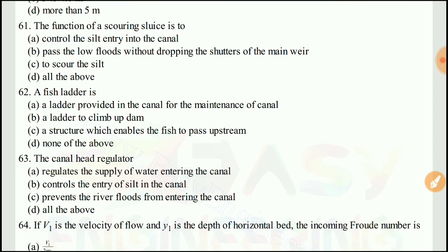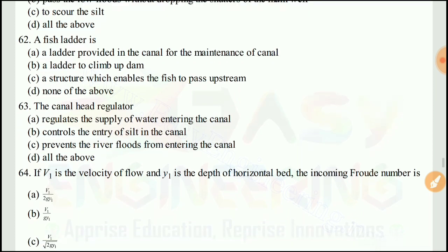Question 61: The function of a scouring sluice is — the right answer would be D, all of the above: to control silt entry into the canal, pass low floods without dropping the shutters of the main weir, and scour the silt.